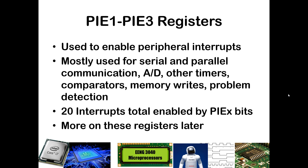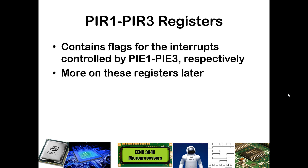If you want to use any of the peripheral interrupts, they have enable bits spread across three registers: PIE1 through PIE3. Those special interrupts allow us to handle things like serial communication, analog-to-digital conversion, other timers such as the timer 1 module, particular memory writes, or detected problems on the processor — 20 total interrupts enabled by the PIE bits. We will talk more about those in context when we learn about analog-to-digital conversion and serial communication. The response flags for peripheral interrupts are in PIR1 through PIR3, where you can check which peripheral interrupts have been triggered.